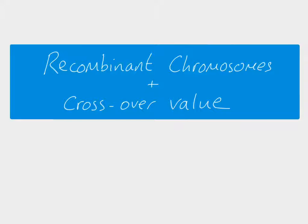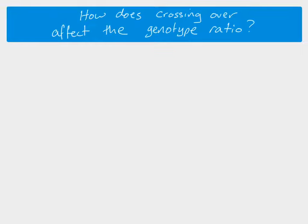Hi there everybody. In today's video we're going to look at recombinant chromosomes and the crossover value. This is all linked to the idea of crossing over. We know what crossing over is, and we want to know how that affects the genotype ratio, which would then affect our phenotype ratio as well.